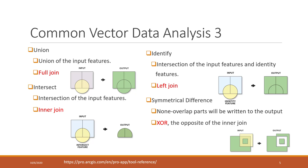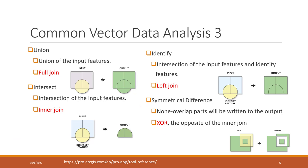Next, let's introduce overlay analysis. These analyses are normally used between two feature classes. We have union, intersect, identify, and symmetrical difference. Union we just mentioned — it combines two features together keeping all joined results from both inputs; it's more like a full join in SQL.